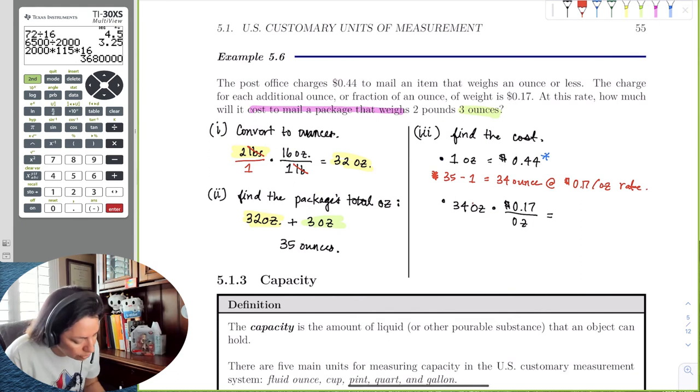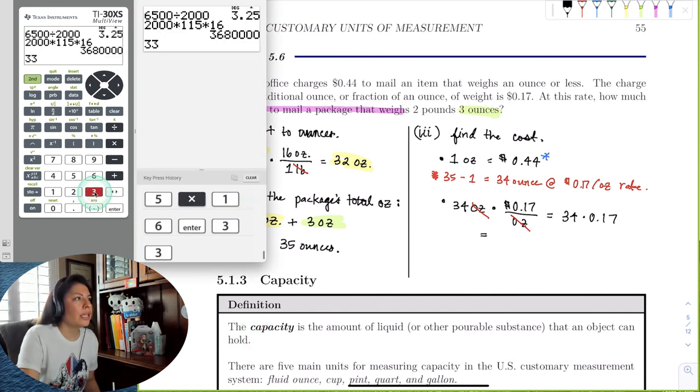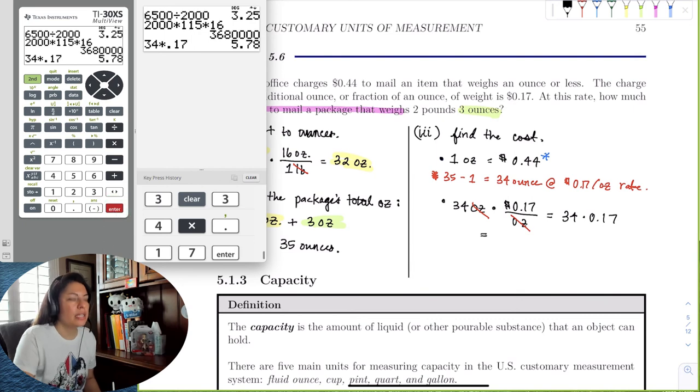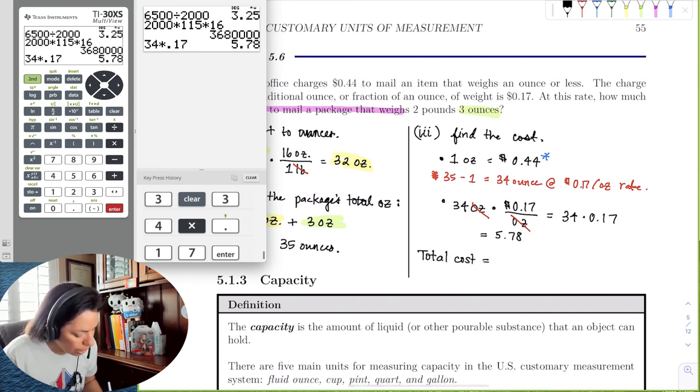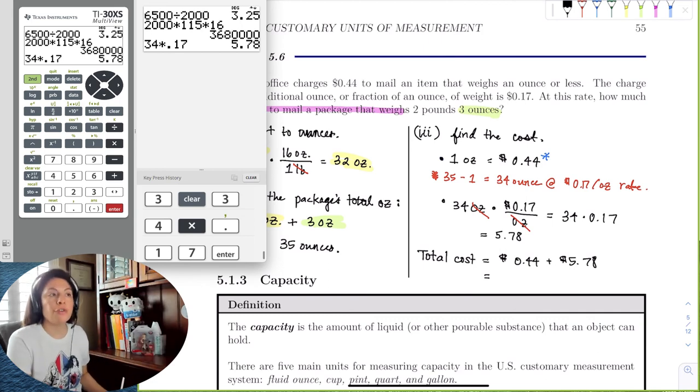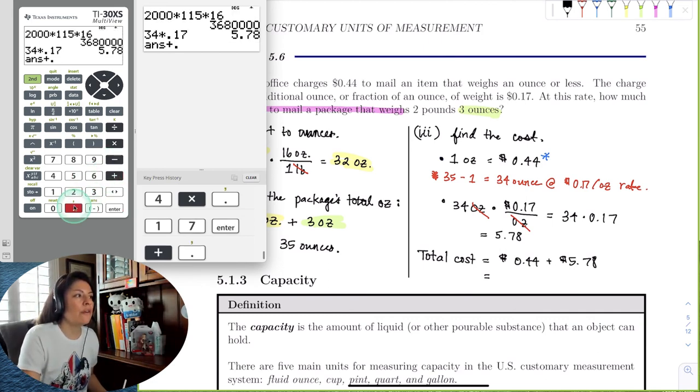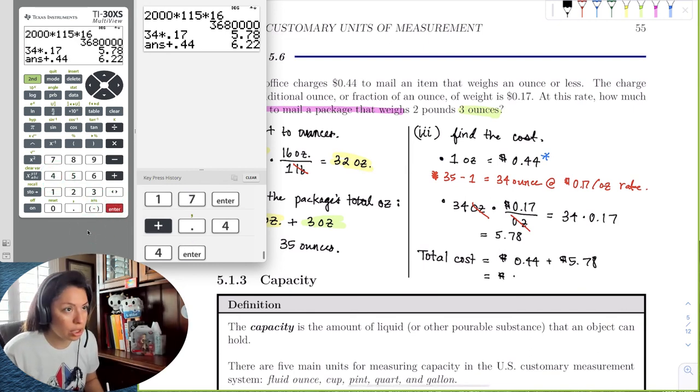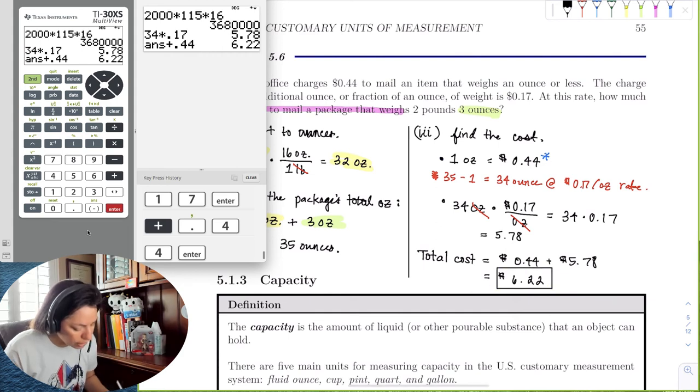We could see ounces reduce out, and we're just left with 34 times 0.17. Let's go to the calculator and calculate 34 times 0.17. So that's $5.78. So the total cost of the package is now going to be equal to 44 cents for that first ounce, plus $5.78 for the other 34 ounces. So let's go ahead and add to this number 44 cents. And then we get $6.22. So the cost to mail the package that's two pounds and three ounces is $6.22.